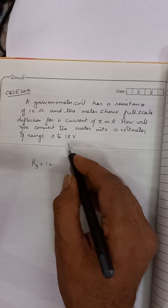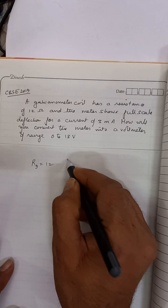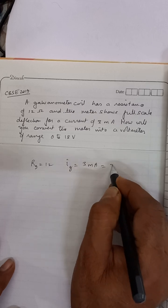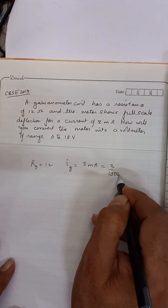And the meter shows a full scale deflection for a current of 3 milli amperes. IG value is 3 milli amperes which will be written as 3 upon 1000 amperes.